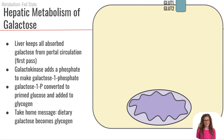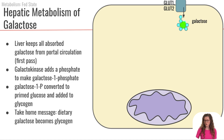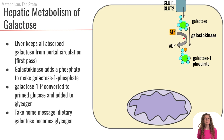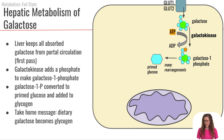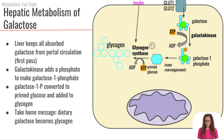Now let's look at what happens to galactose in the liver. The liver keeps all the galactose absorbed from a meal. Galactose enters the liver through either GLUT1 or GLUT2, just like glucose. From there, galactokinase adds a phosphate group to trap galactose inside the cell. That galactose-1-phosphate can then undergo many rearrangements to become primed glucose, which glycogen synthase can use to form glycogen — the same process of glycogenesis.